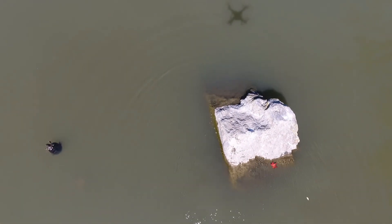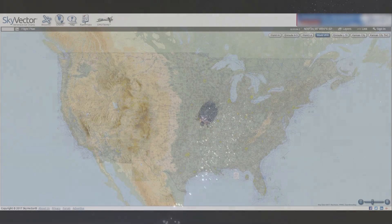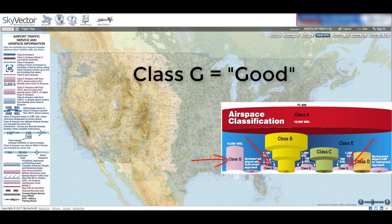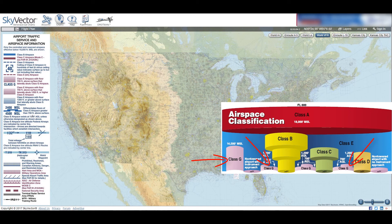However, we won't worry about class A airspace since it starts at 18,000 feet MSL, far too high for most UAS. Of these classes of airspace, all but class G are controlled airspace, which means we cannot legally fly there unless we hold a waiver granting us access.